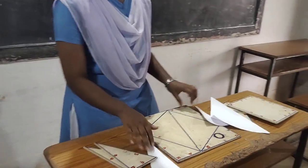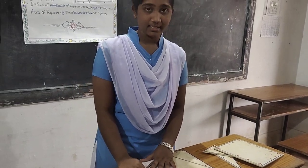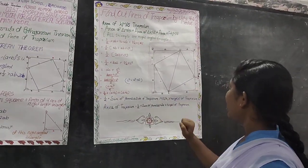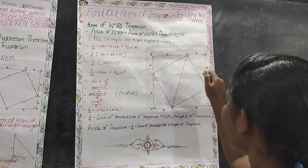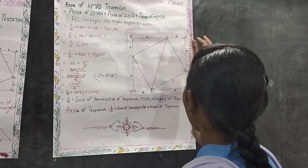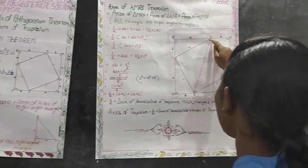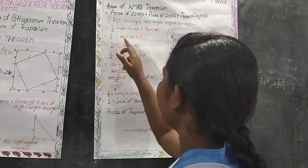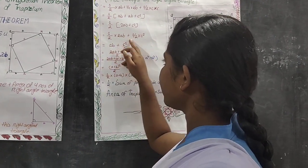Three triangles. So the area of the KMRS trapezium equals the sum of these three triangles. The area of the KMRS trapezium equals the area of triangle MRN plus the area of triangle KMR plus the area of triangle KNS. Area of triangle MRN equals half into AB, since A is the height and B is the base. Area of triangle KMR equals half into AB. Area of triangle KNS equals half into C into C, since C is both the height and the base. Half is common, giving AB plus AB plus C squared, then half into 2AB plus C squared.